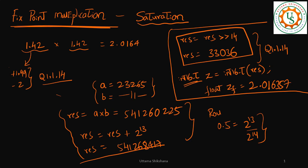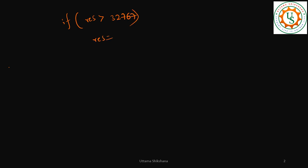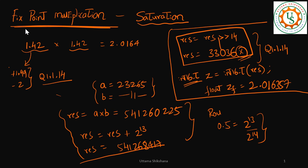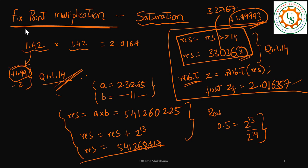This number is not fitting into 16 bits, so we apply saturation logic. If the result is greater than 32767, we retain 32767. After truncation, Z = 32767. Dividing 32767 by 2 to the power of 14 gives the maximum value of +1.99993. But we expected 2.01 — so we have a huge loss here.